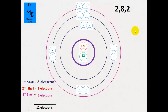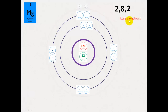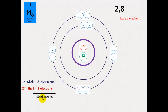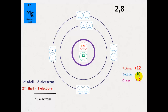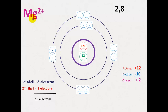To get a full outer shell, magnesium is going to want to lose two electrons. So it loses those two electrons, giving it a total of ten electrons. It still has twelve protons because that number doesn't change, which gives it an overall charge of plus two. This means it changes from the magnesium atom into the magnesium ion, Mg²⁺.